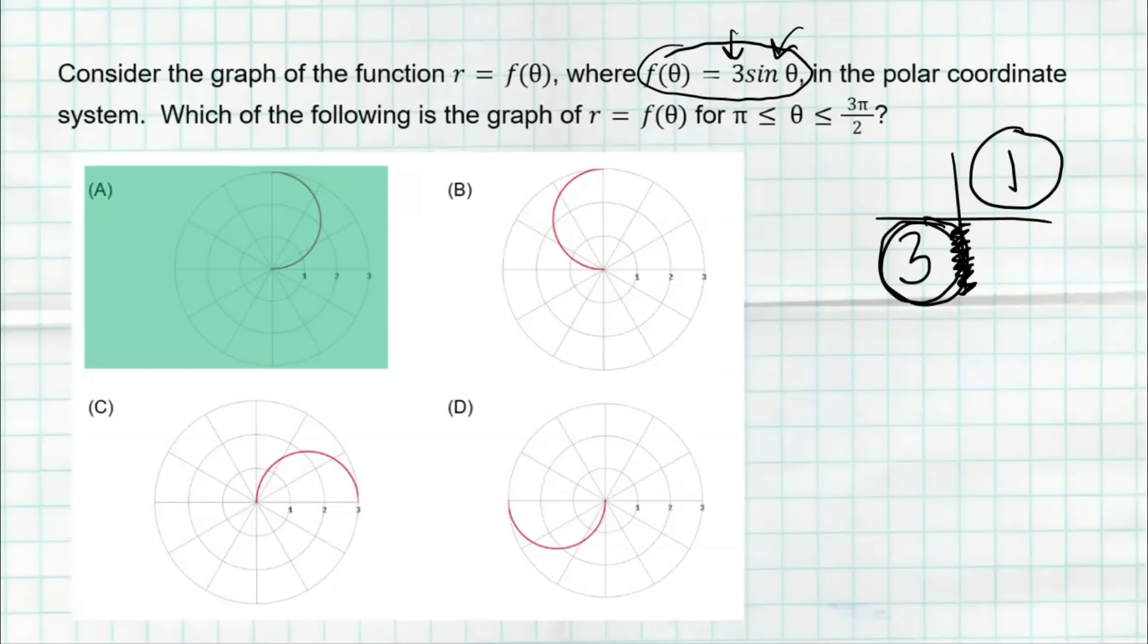So that's why the correct answer there is A. And if you don't believe me, you could go ahead and try some values out. Like, do five pi over four. Five pi over four is right about here. If I plug it in, I'm gonna get negative radical two over two times three. I'm gonna get a negative value. And in the polar world, when you are at an angle, right here's five pi over four, but you get a negative radius, then that reflects you across the pole into quadrant one. So that's why A is the correct answer. Values from pi to three pi over two are gonna end up being drawn in quadrant one, which is choice A.